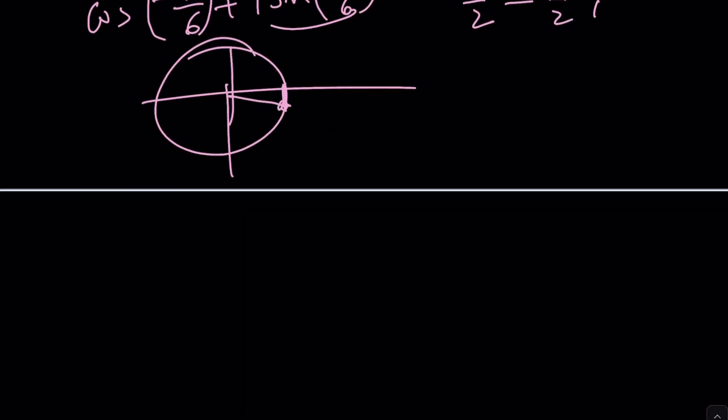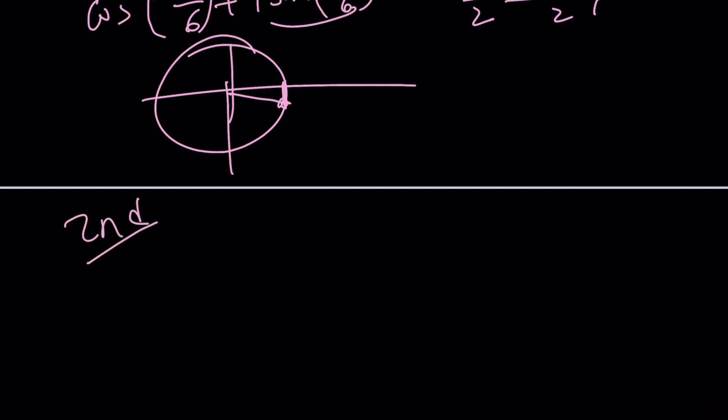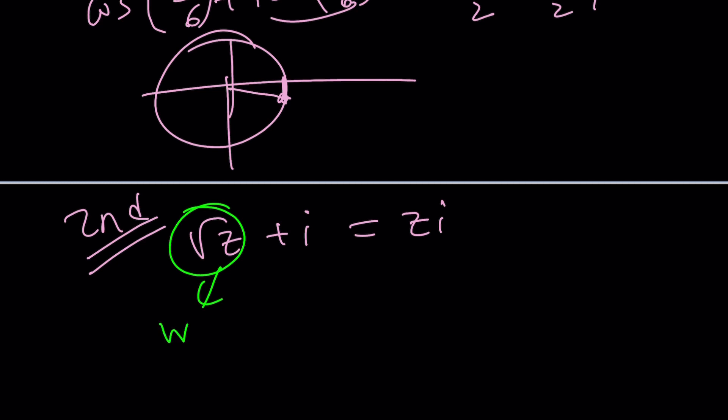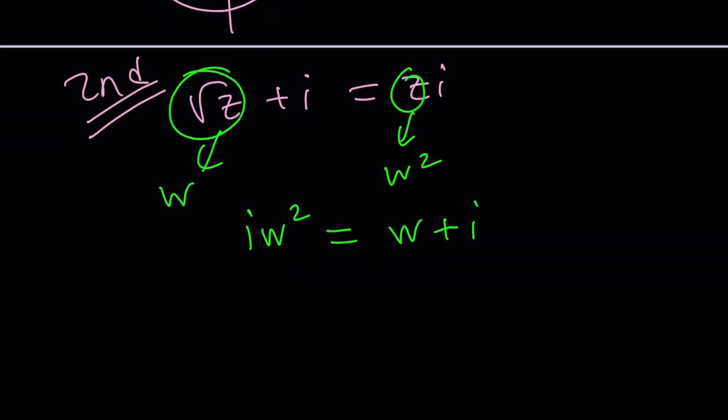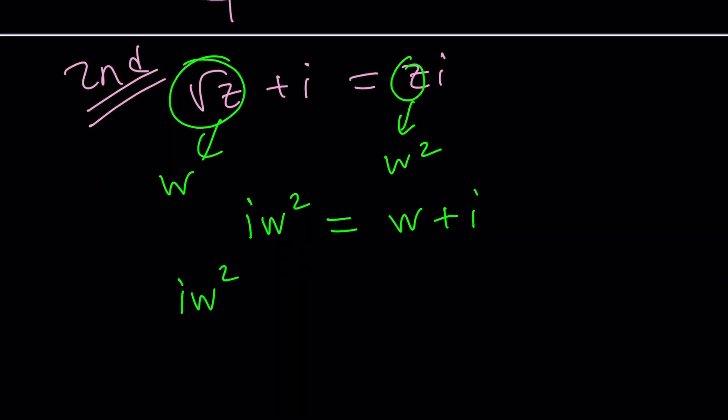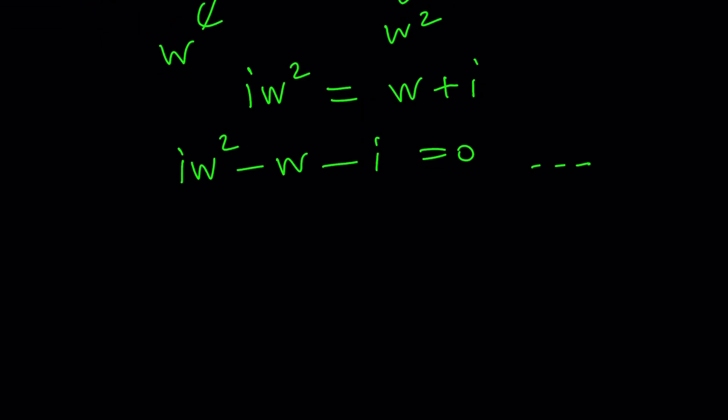Well, let me introduce the second solution real quick because it's going to be real quick, okay? Well, sort of. Root z plus i is zi. I'm going to go ahead and set root z equal to something. How about w? If this is w, this will be w squared. And guess what? You'll get another complex equation. But this time it's a little different because i is the coefficient of w squared. And then if you solve it, you're going to get the solution. Let's solve it.